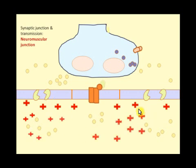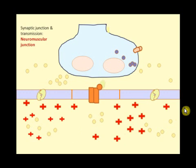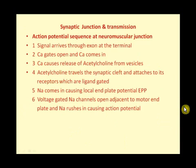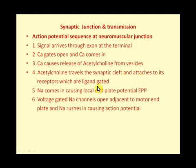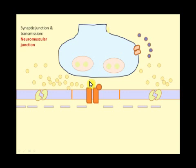The action potential occurs, and all the area in the cell becomes positive. To summarize in sequence: the signal arrives at the terminal, calcium gates open, calcium influx triggers acetylcholine release from vesicles, acetylcholine travels the cleft and attaches to ligand-gated receptors — this is the important part.